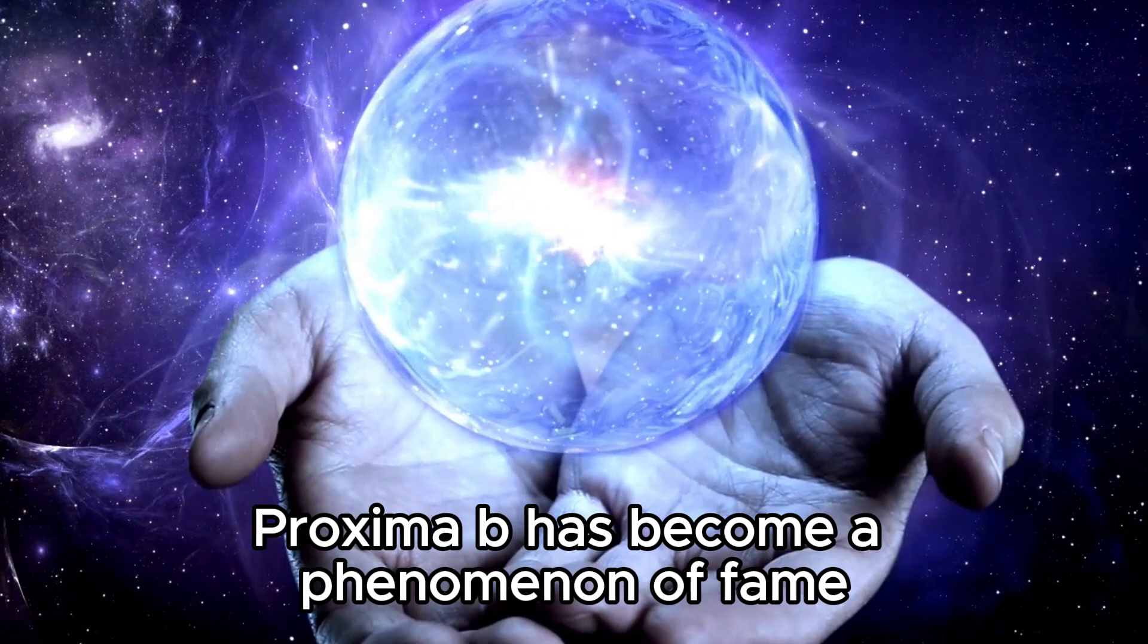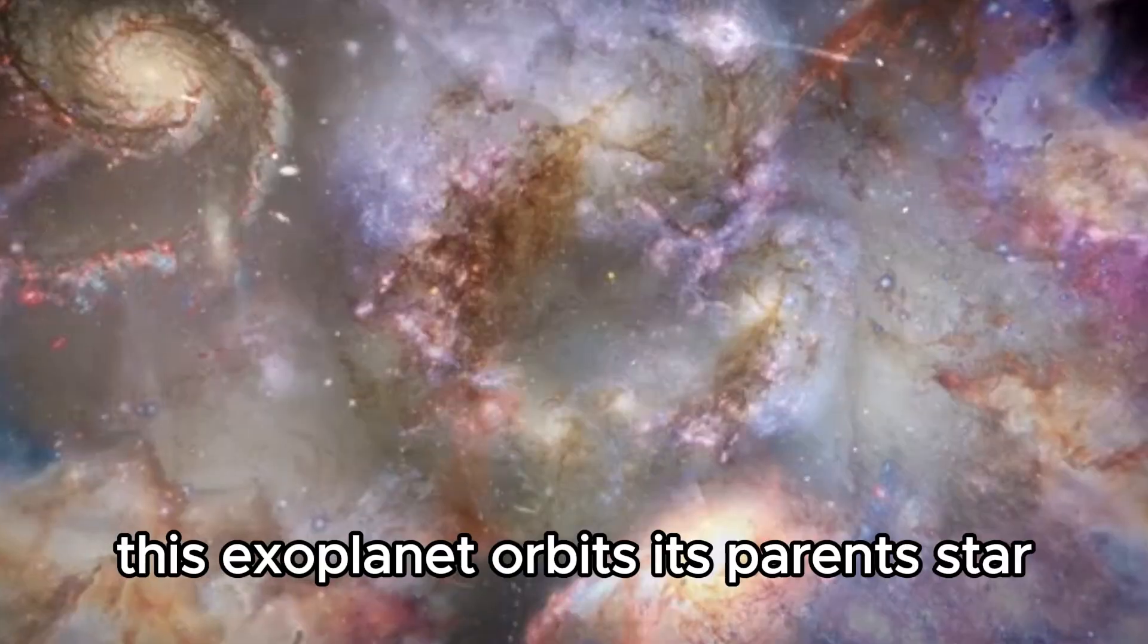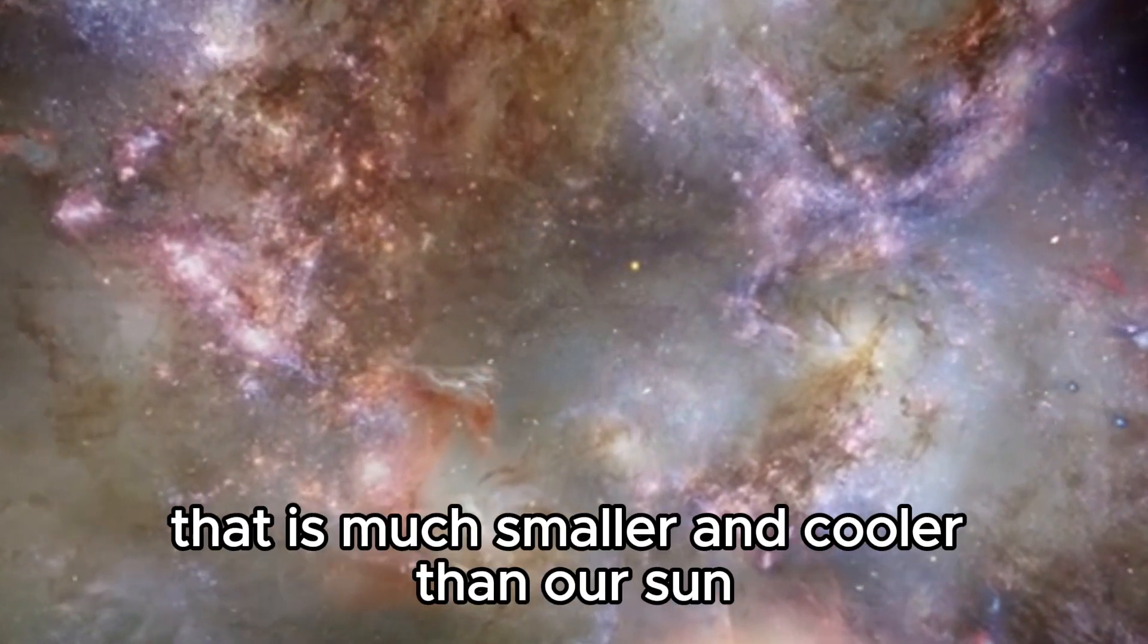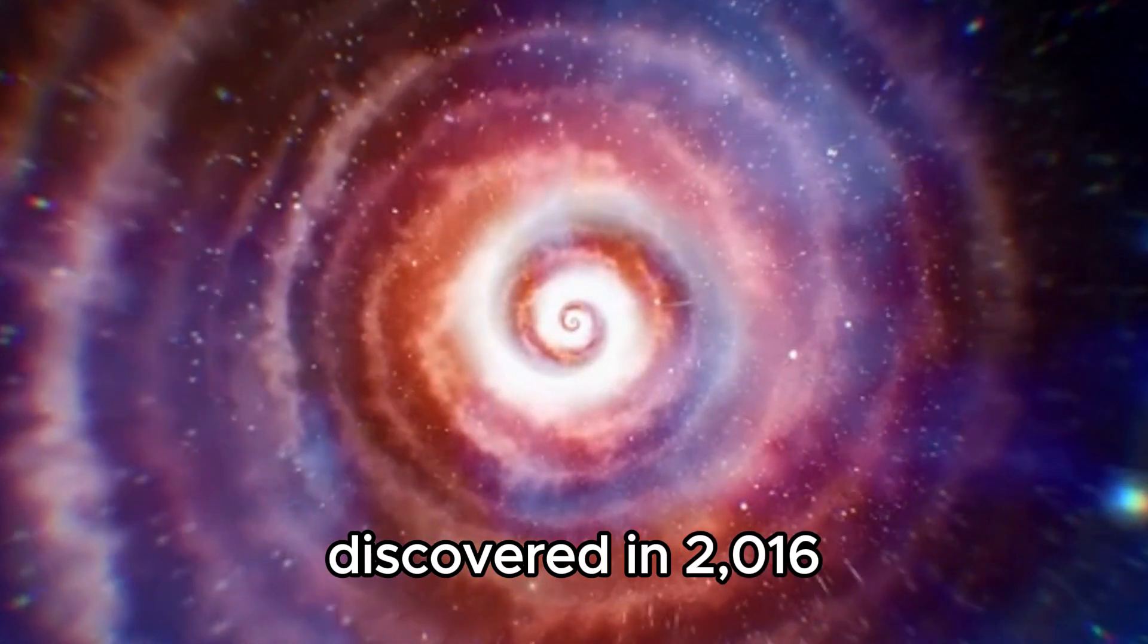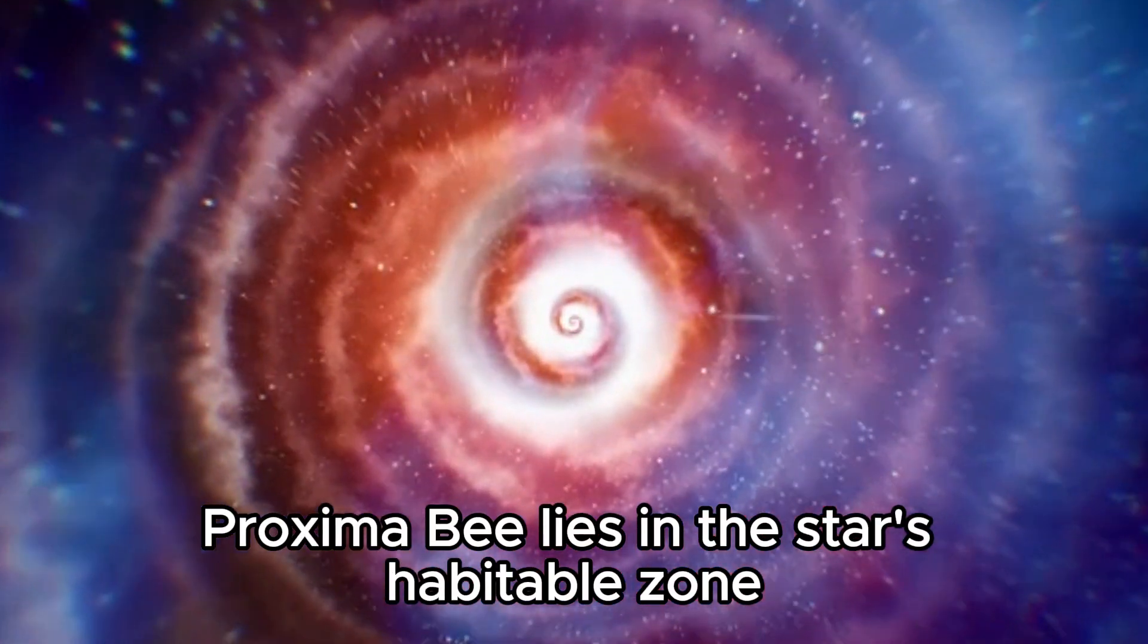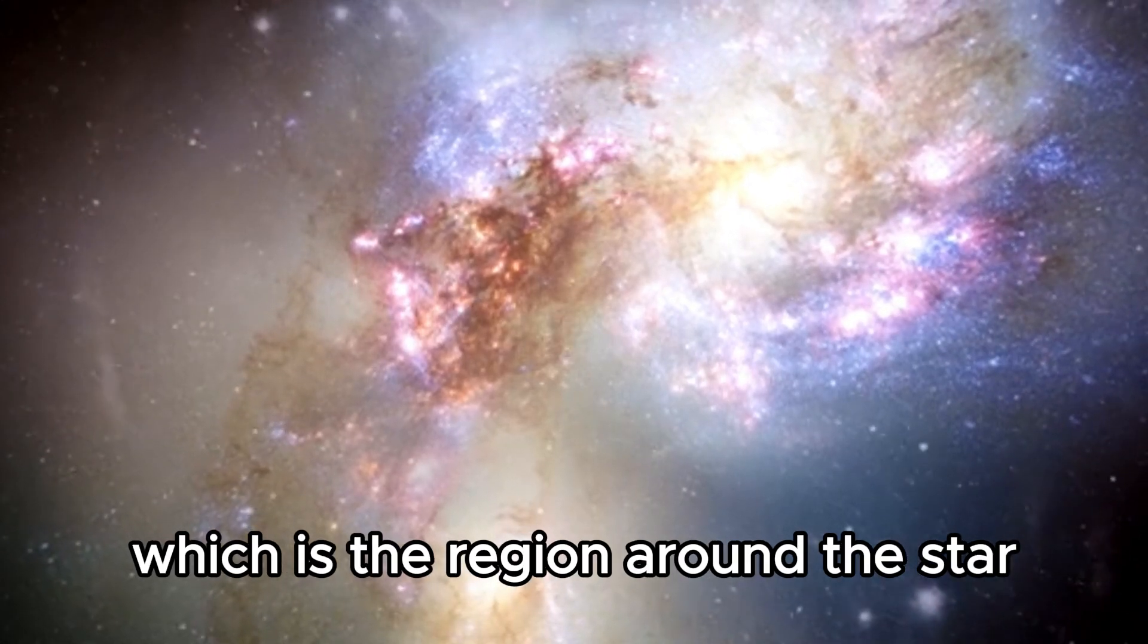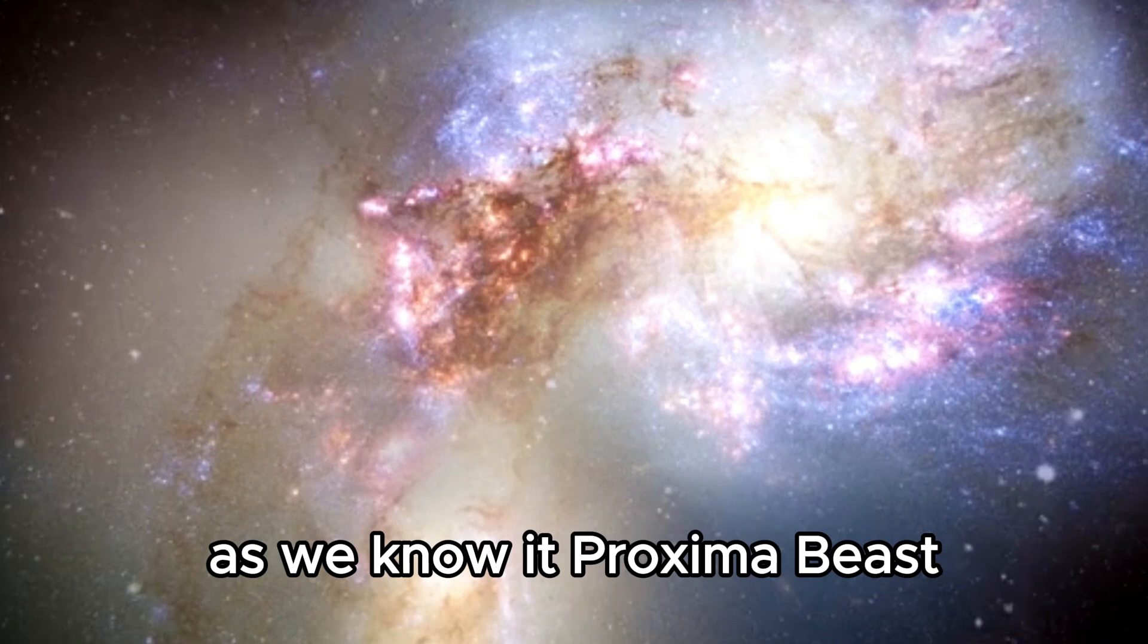Proxima b has become a phenomenon of fame due to its potential to be habitable. This exoplanet orbits its parent star, Proxima Centauri, a red dwarf that is much smaller and cooler than our sun. Discovered in 2016, Proxima b lies in the star's habitable zone, also known as the Goldilocks zone, which is the region around the star where conditions could allow the presence of liquid water, a crucial ingredient for life as we know it.